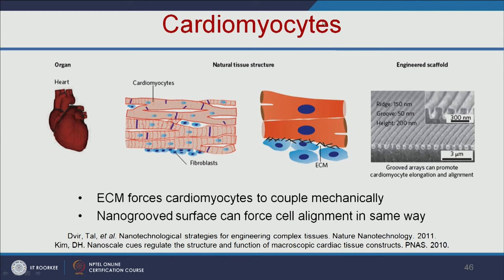An example is cardiomyocytes. Grooved arrays can promote cardiomyocyte elongation and alignment. The extracellular matrix forces cardiomyocytes to couple mechanically, and a nanogrooved surface can force cell alignment in the same way, mimicking the natural tissue structure.